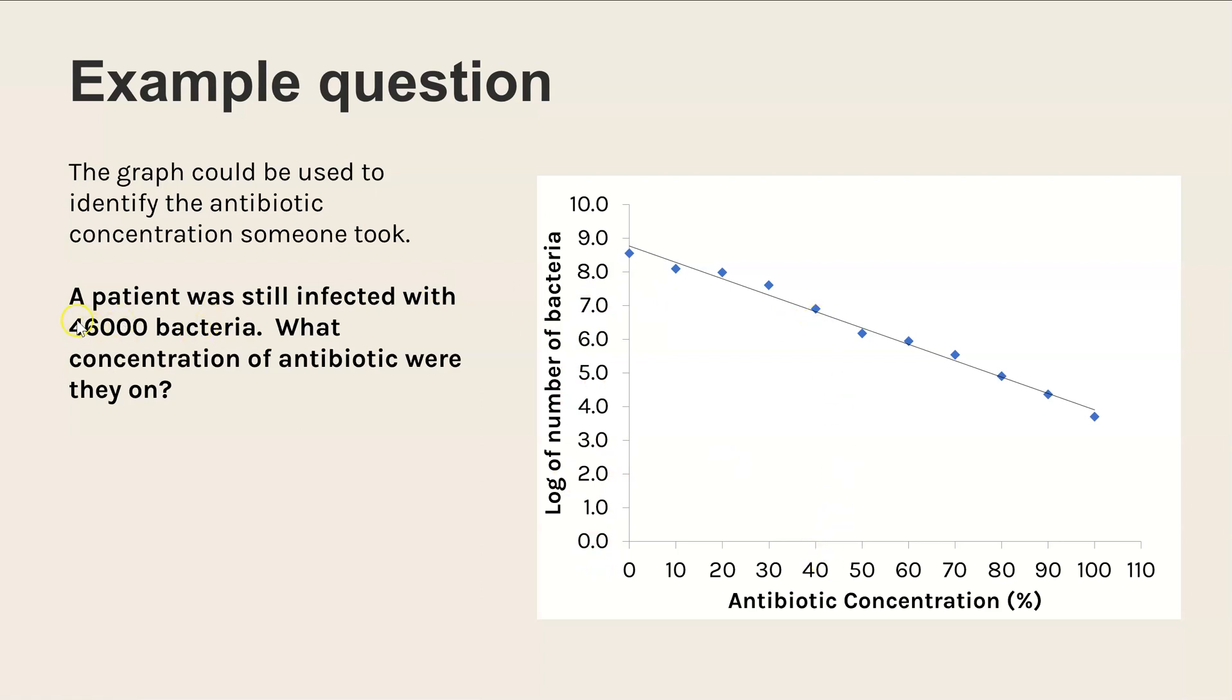The first step is we need to convert that into log so we can then read off the graph. So we'd enter log onto your calculator and then enter 46,000. That then gives us a log value of 4.66.